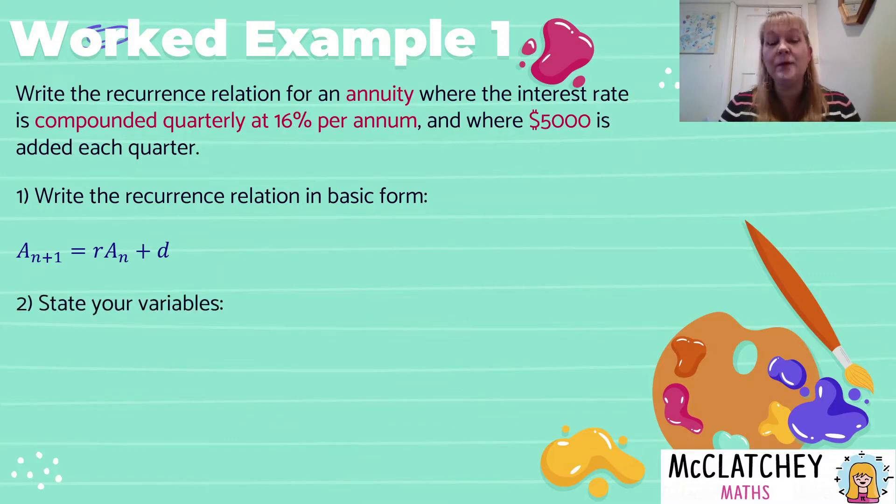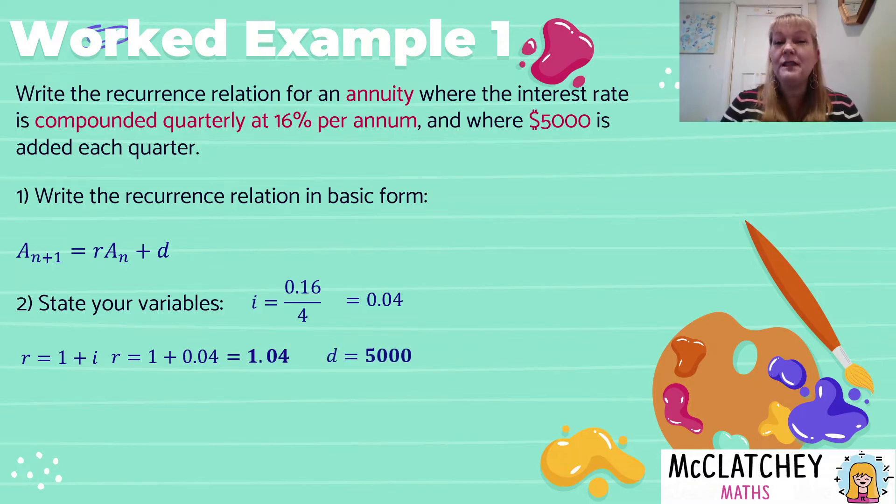So let's look at our first key piece of information. We're told it's an annuity. And that's the one thing you want to look out for because if it's not an annuity, you're going to use a different formula. So firstly, we're told it's an annuity. So boom, we know straight which recurrence relation to pull off our formula sheet. Second thing we're told is it's compounded quarterly. So that tells us we need to actually convert our interest rate per year to a quarterly rate. We're also told that $5,000 is added each quarter.